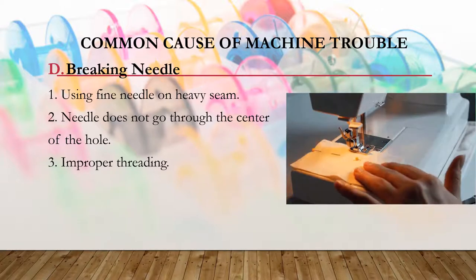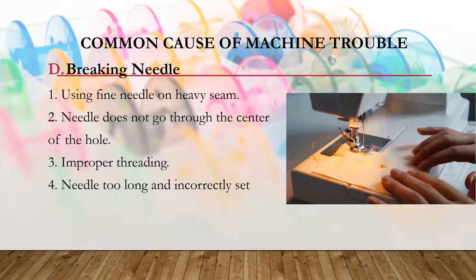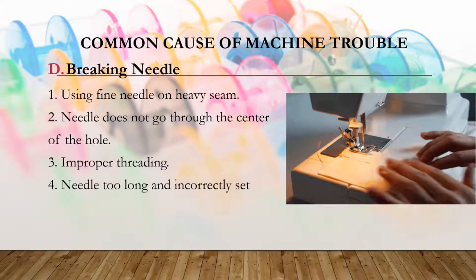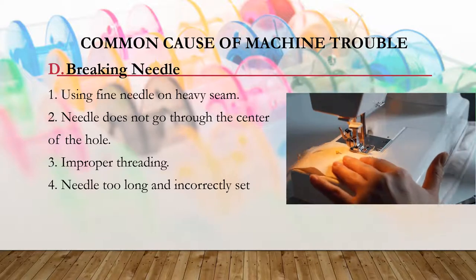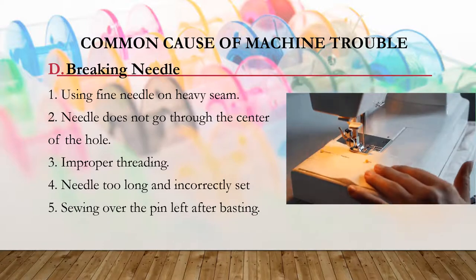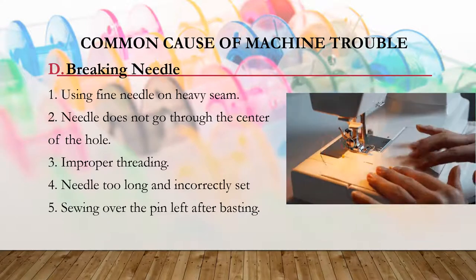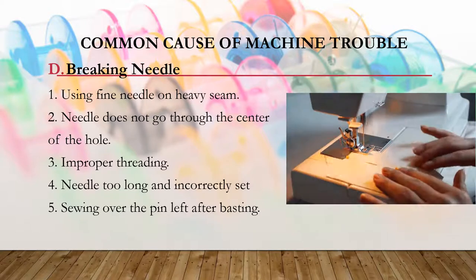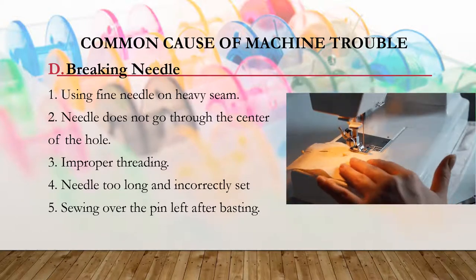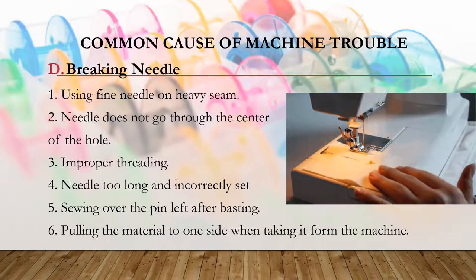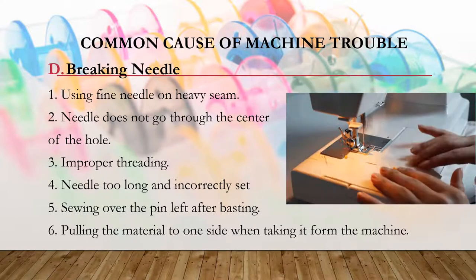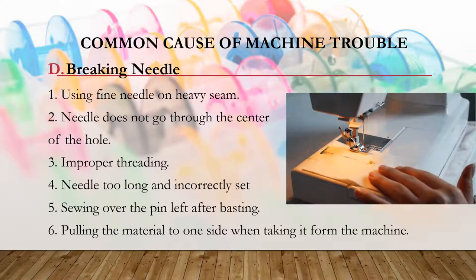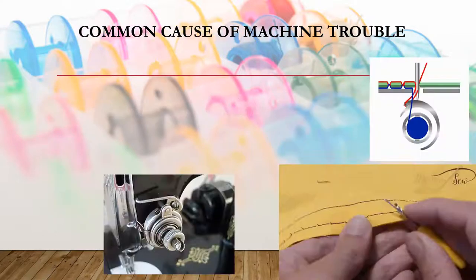Improper threading can also cause needle breaking, so you should thread the machine properly. The needle being too long or incorrectly set is another cause; the needle size should correspond to the machine and be threaded properly. You should not sew over pins left after basting. Also, do not pull the material forcibly to one side when taking it from the machine or while sewing, as this can break the needle.